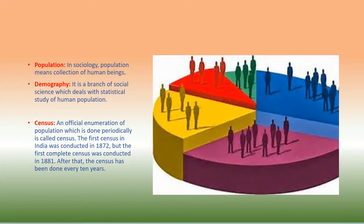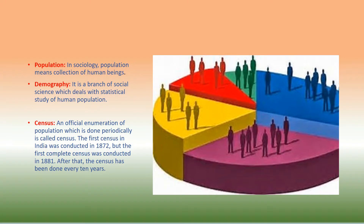Census: an official enumeration of population which is done periodically is called census. The first census in India was conducted in 1872, but the first complete census was conducted in 1881. After that, the census has been done every 10 years.